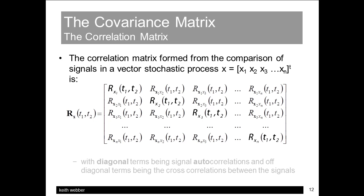Let's start by considering an autocorrelation of some vector process x as shown here. The diagonal terms are the autocorrelation functions of the individual variables, and the off-diagonal terms are cross-correlations between the different signals of the vector.